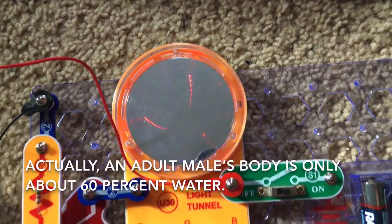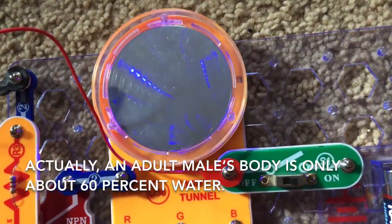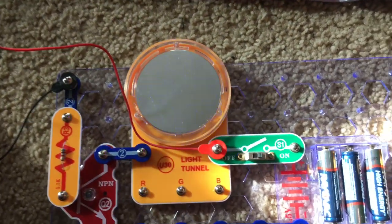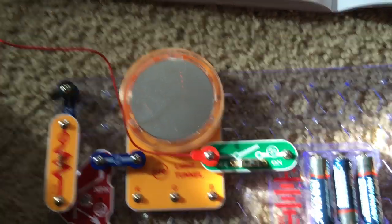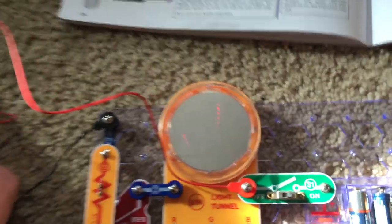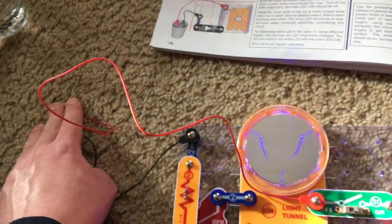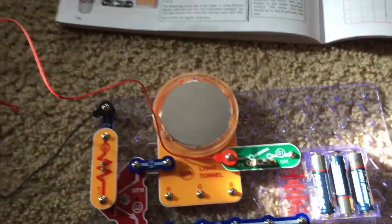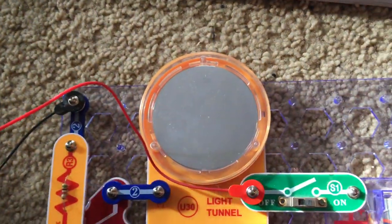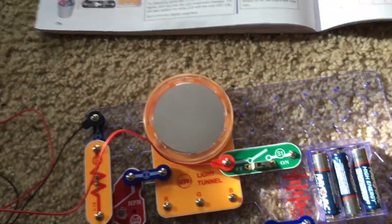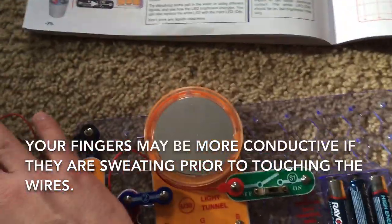Your body is mostly water, at least 70% water, and so if conditions are just right, your fingers will complete the circuit and allow the light tunnel to come on. Sometimes they might be drier and have no effect on the electric current, but if you're sweating, you might be more likely to trigger them.